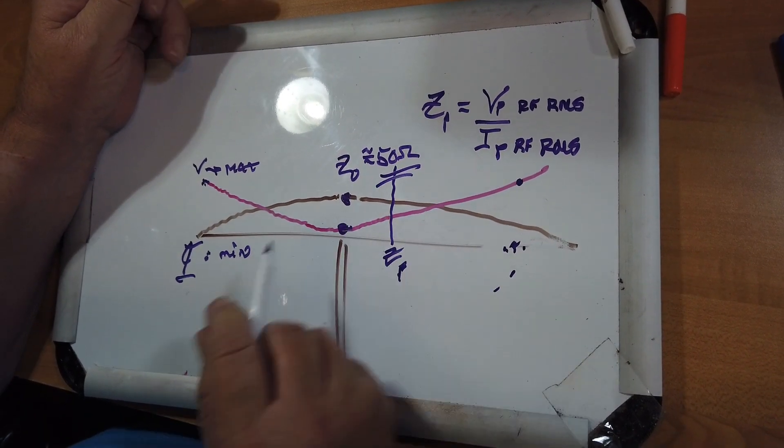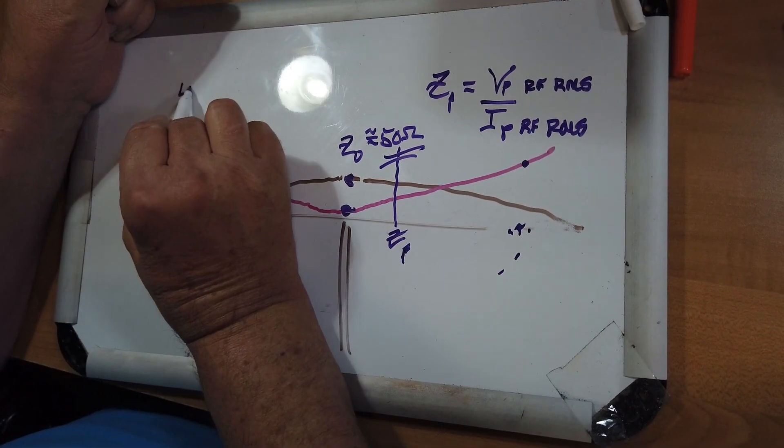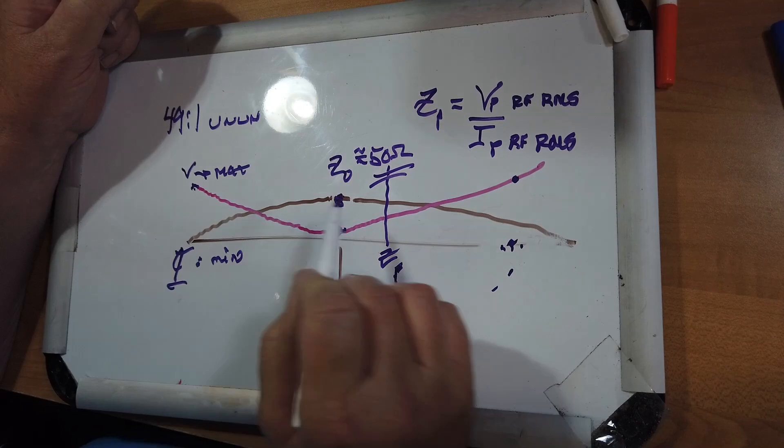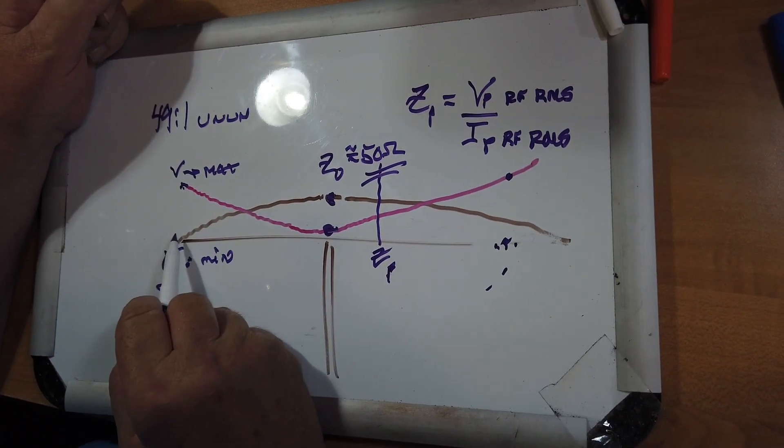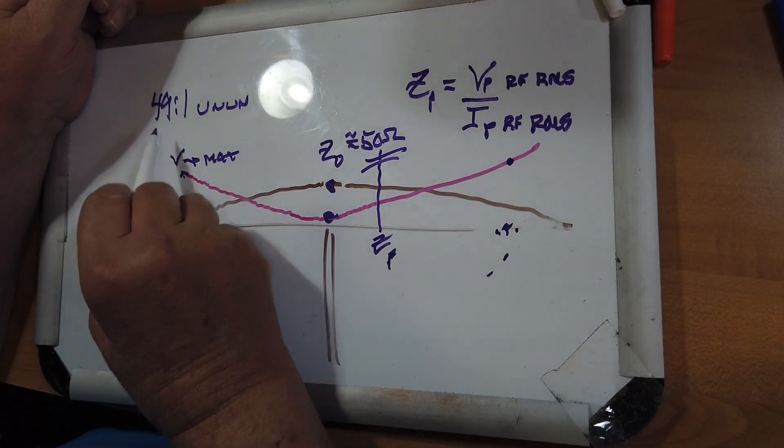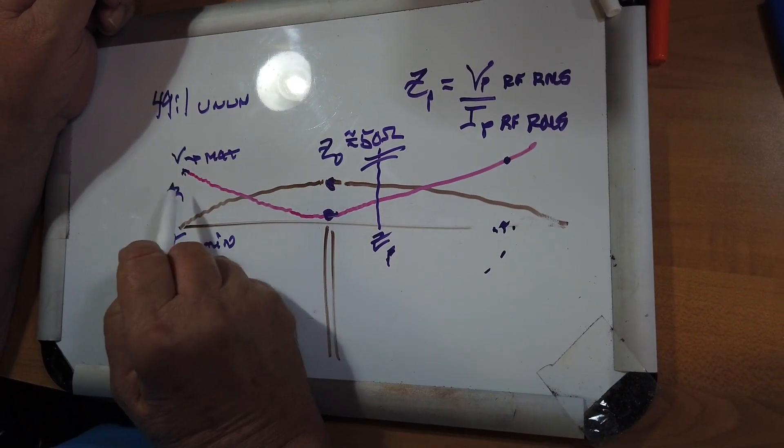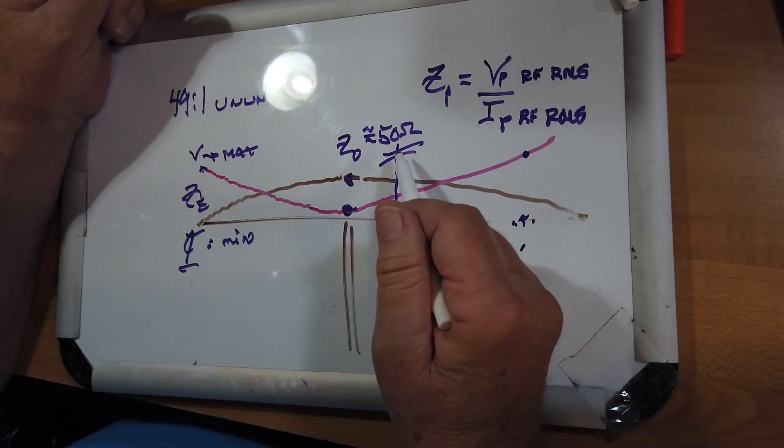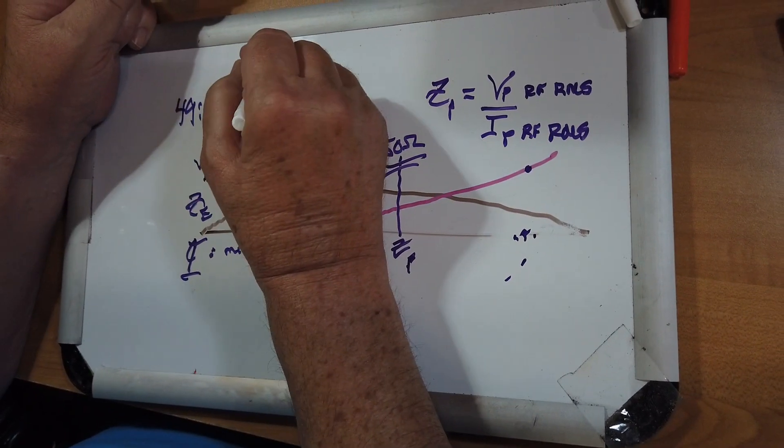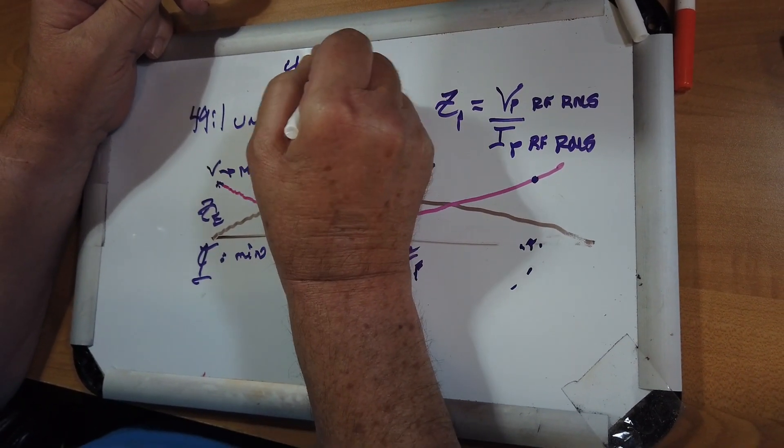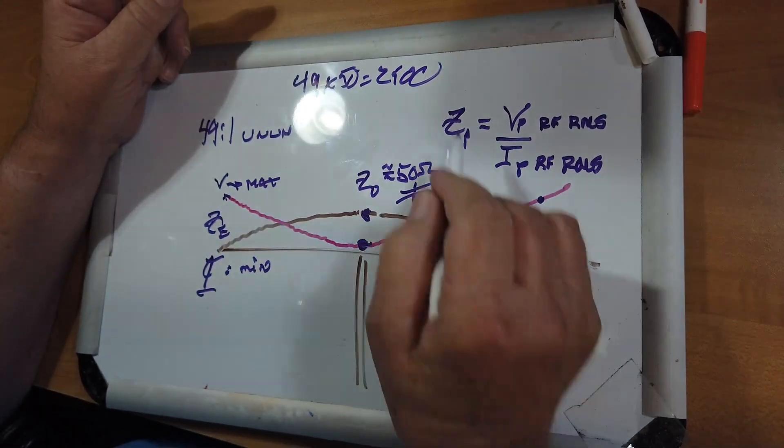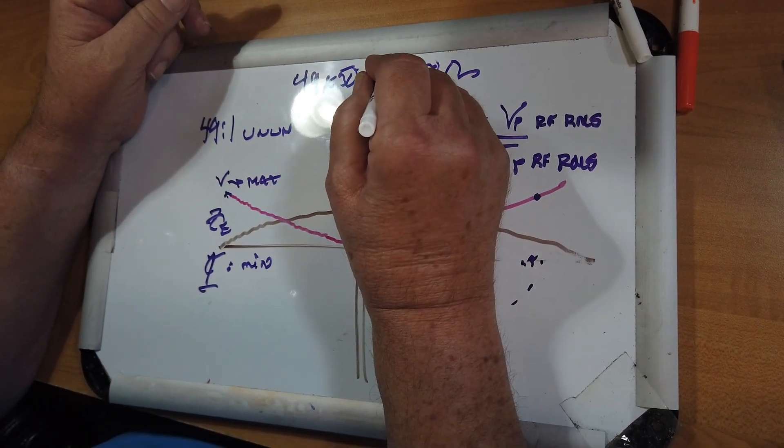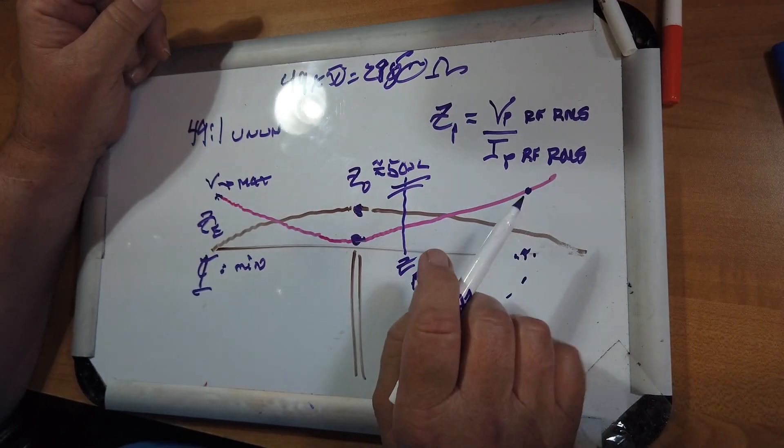If this is 50 ohms in the middle, and you use a 49 to 1 unun, and they are ununs by the way, you are assuming that the impedance right here, Z at the end, is a ratio of 49 to 1 over the nominal impedance at the center. So that'd be 49 times 50, about 2,500 ohms impedance, 2,450 ohms impedance.